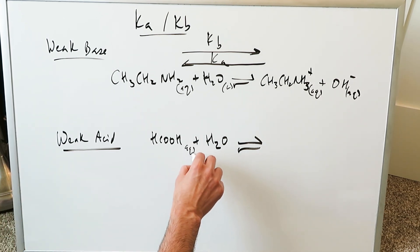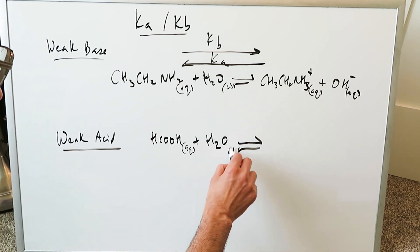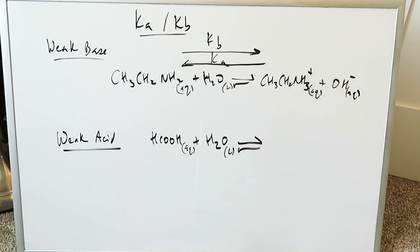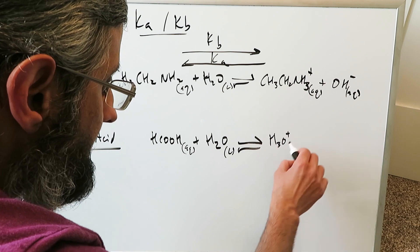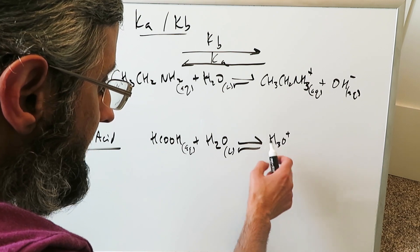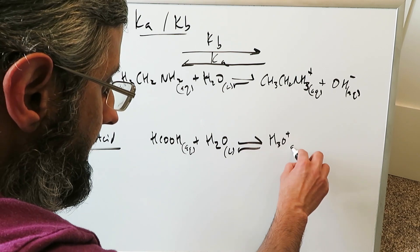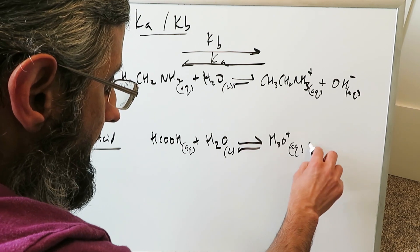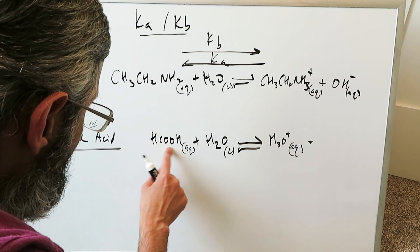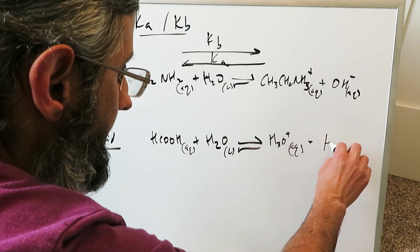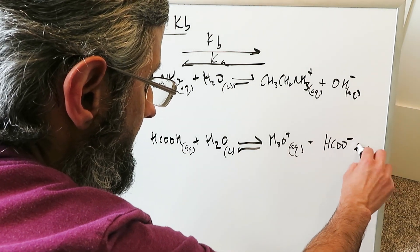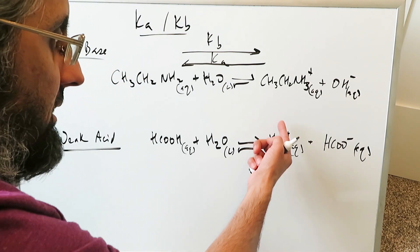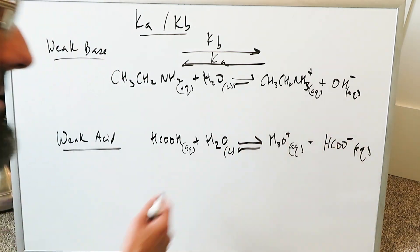Formic acid is aqueous and water is liquid. You'll have a conjugate acid and a conjugate base. The conjugate acid will be the hydronium ion, or you can abbreviate it as a hydrogen ion. Your conjugate base will be the formate anion, HCOO−.